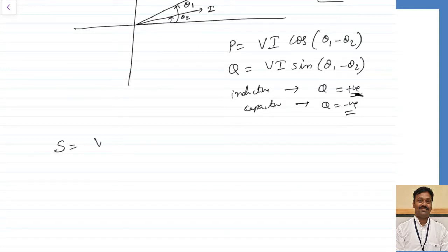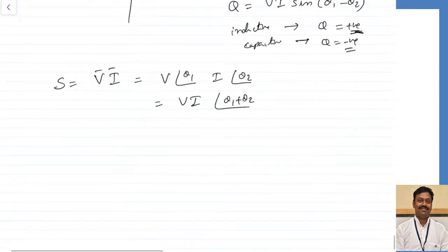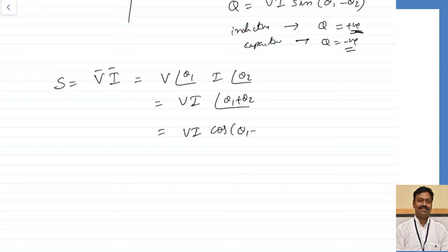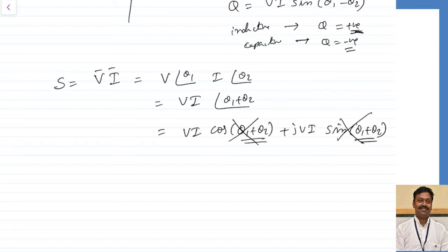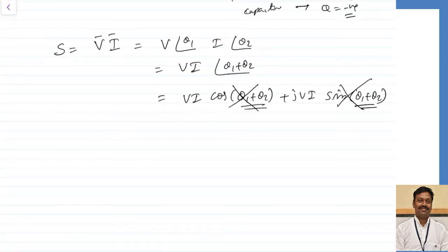To calculate apparent power S, let us see what happens if I simply multiply V·I. V is at angle θ₁ and I is at angle θ₂, so V·I = V·I∠(θ₁ + θ₂). This adds the angles rather than subtracting them. In rectangular form this gives V·I·cos(θ₁ + θ₂) + j·V·I·sin(θ₁ + θ₂), which is not correct — I want the difference of the angles. Taking the conjugate of one vector changes only the sign of the angle, leaving the magnitude the same.